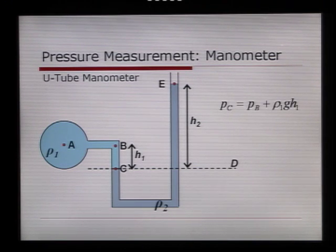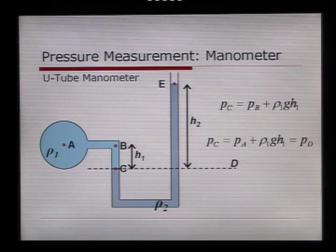We start by saying that the pressure point C is equal to the pressure at point B, plus rho 1 G H1. So that's that column of water on the left-hand side. Pressure point C is also equal to the pressure point A, plus rho 1 G H1. And this is equal to the pressure point D, because the pressure point C and D are on the same line, same height, in the same fluid.